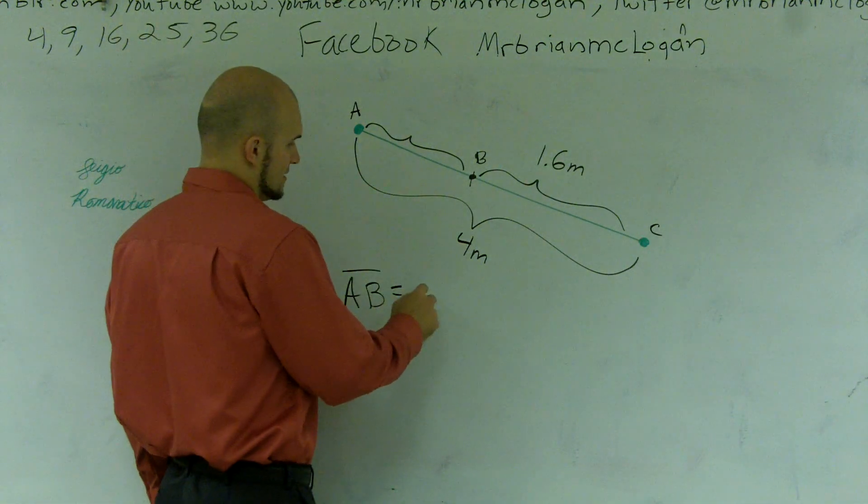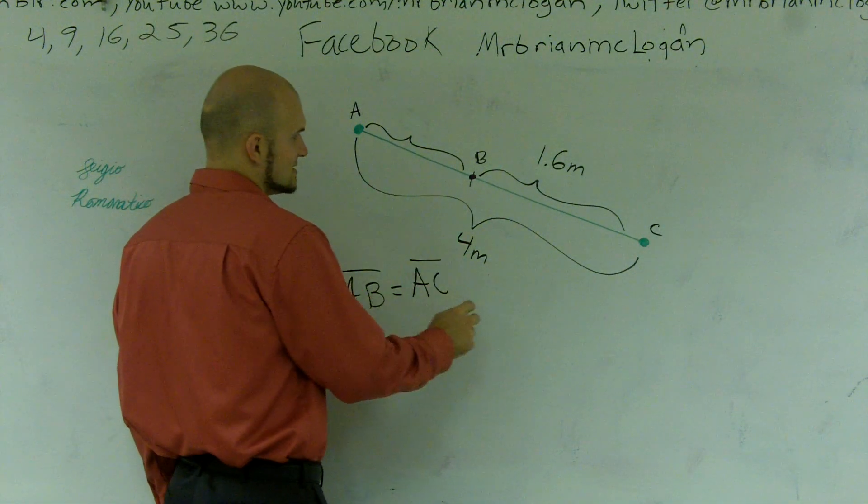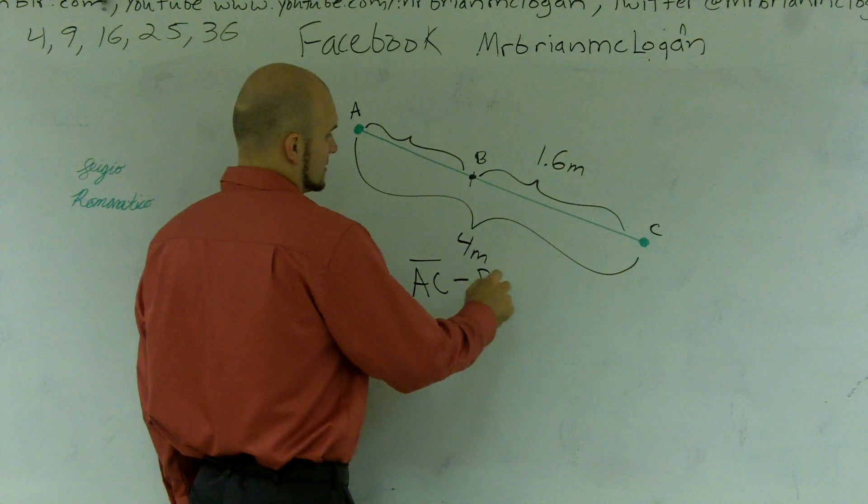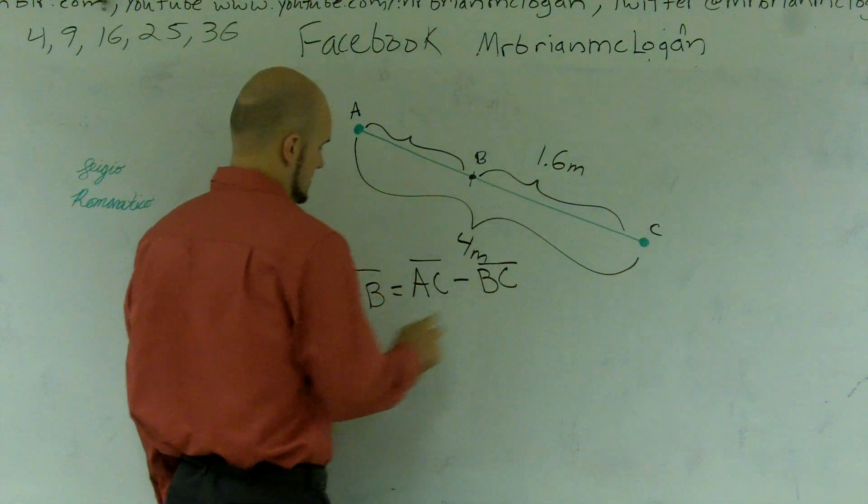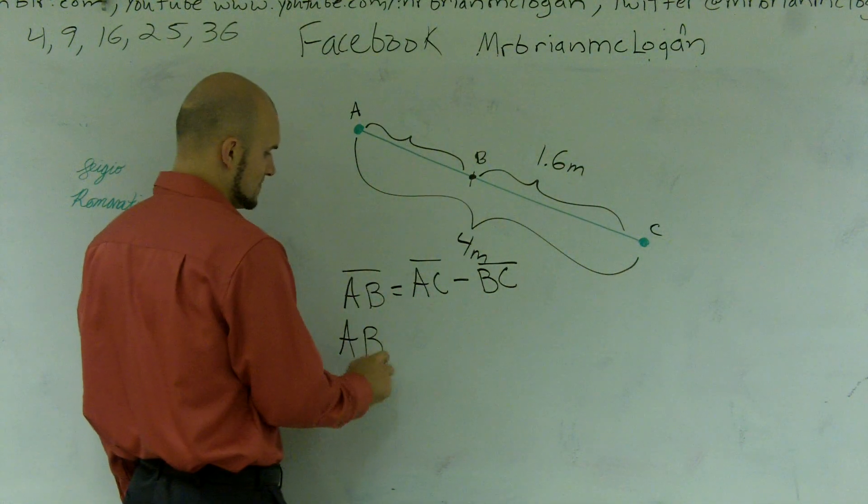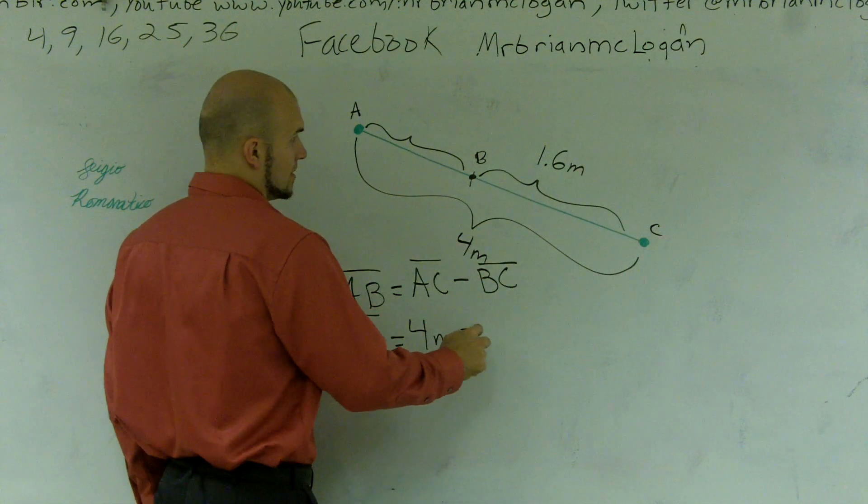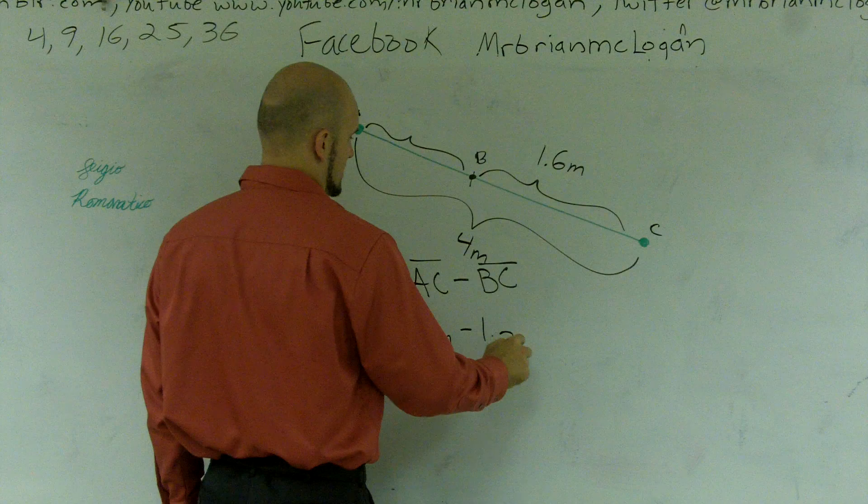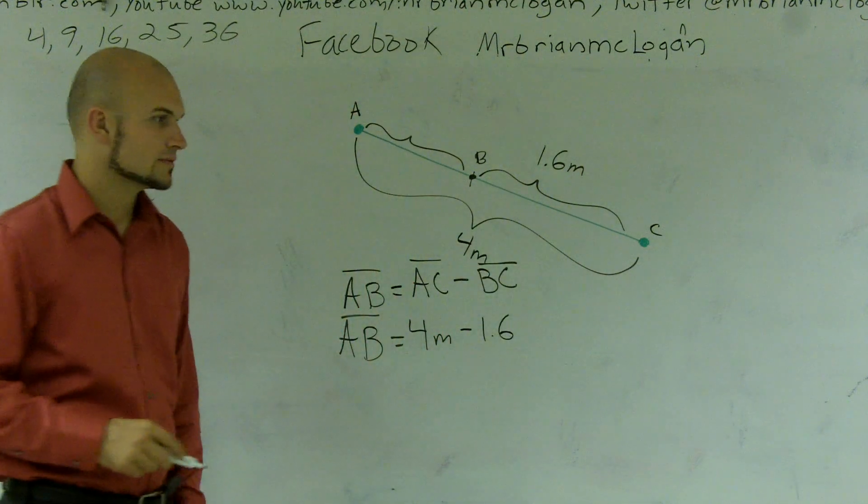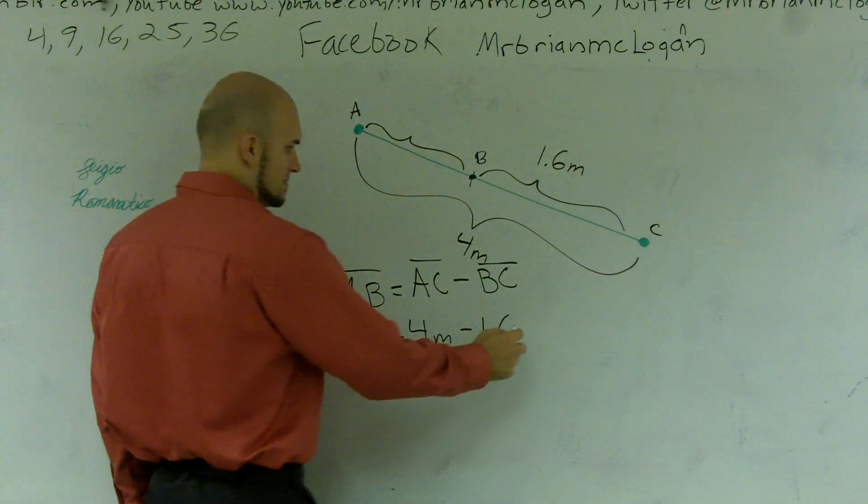What I'll do is I'll take AC, the length of AC, and I'll subtract the length of BC. So what that looks like is AB equals... AC is how long? 4 meters minus 1.6 meters.